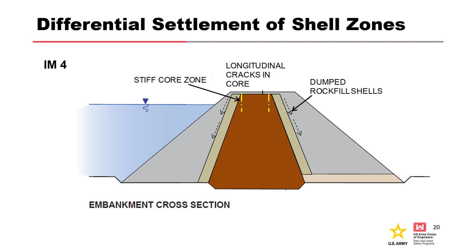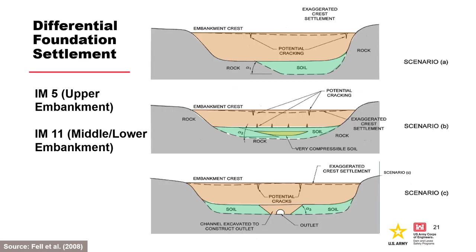Longitudinal cracks on both shoulders may intersect to provide a zone of transverse cracking from upstream to downstream across the core. This slide illustrates situations which may cause differential settlement in the foundation of dams leading to cracking, lateral strains, and low-stress zones subject to hydraulic fracture. IM-5 is for cracks in the upper part of the embankment, and IM-11 is for cracking in the middle and lower parts. Differential foundation support conditions across the profile can include combinations of soil and rock, very compressible soil of limited extent, or differential settlement over conduit excavation backfill.